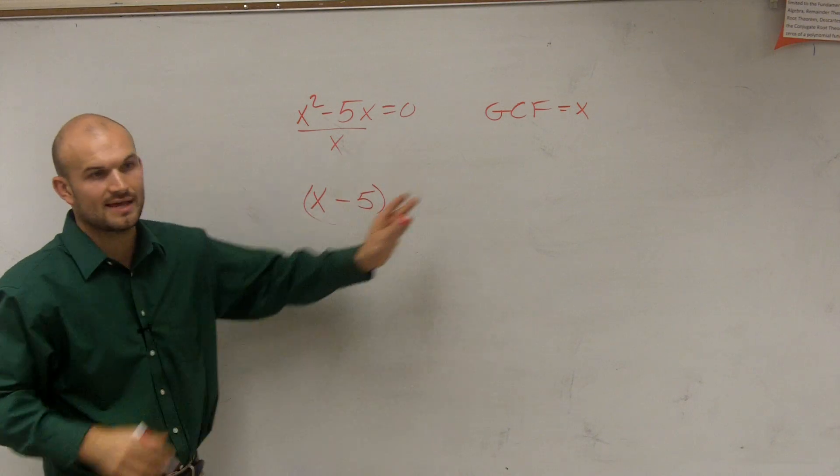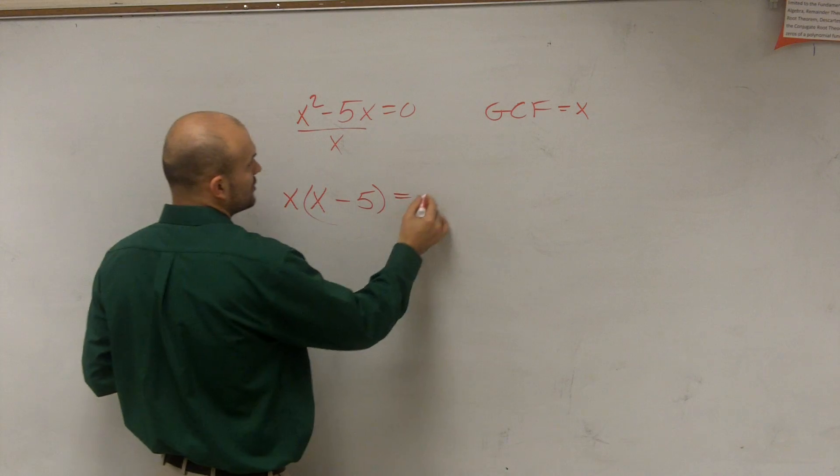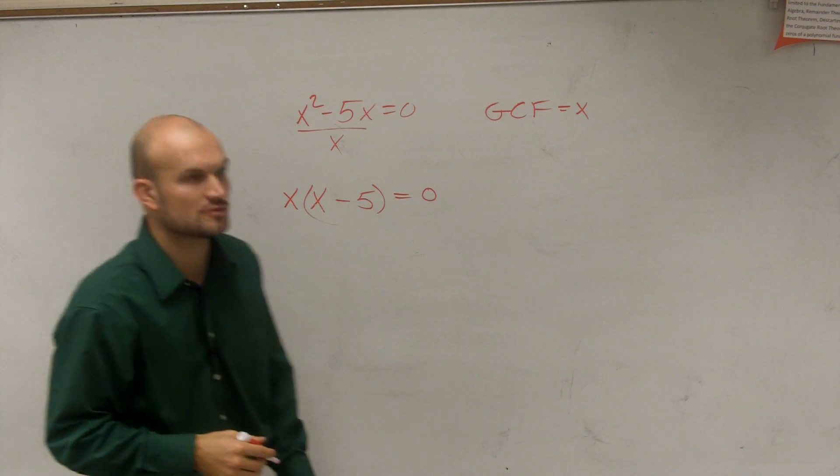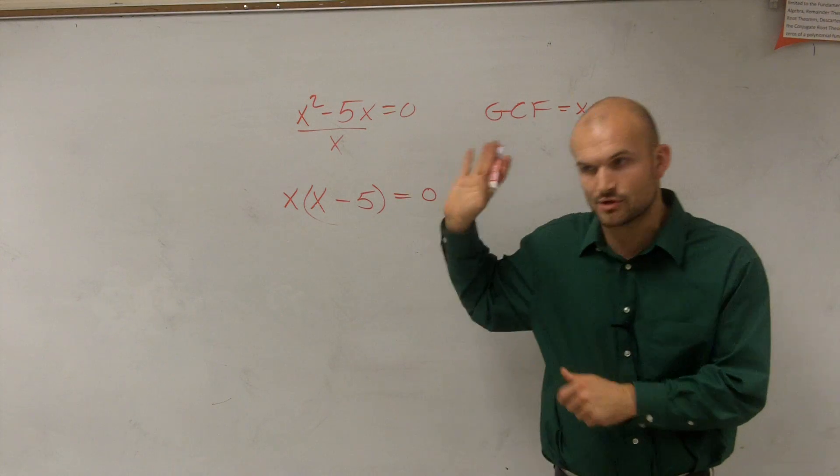So what we're going to do is we're going to divide both of our terms by x. And what we have is x minus 5. Then what we do is we're going to take that and multiply it by our GCF. So we have x times x minus 5 equals 0. So we worked on doing that, without the equal sign and 0 over there.